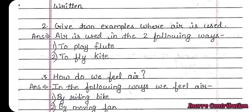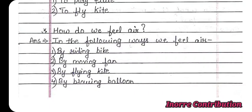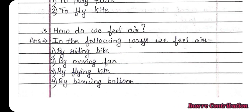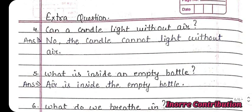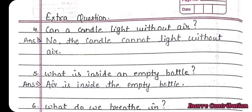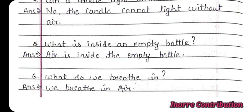Written questions. Give two examples where air is used: to play flute, to fly a kite. How do we feel air? By riding a bike, moving a fan, flying a kite, blowing a balloon. Extra questions: can a candle light without air? No. What is inside an empty bottle? Air. What do we breathe in? We breathe in air.